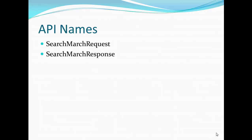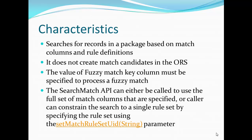The API names are Search Match Request and Search Match Response. Search Match Request is used to send the request to the MDM Hub, and Search Match Response is used to get the response from the MDM Hub. Search Match API is used to do fuzzy matching, and once we get the fuzzy match, we can filter out the result using an exact column.